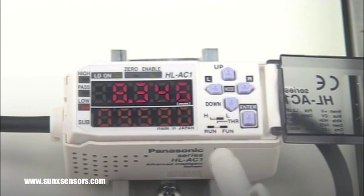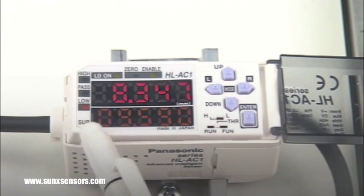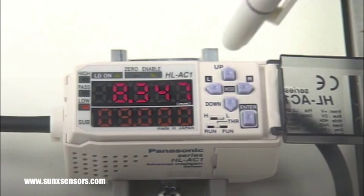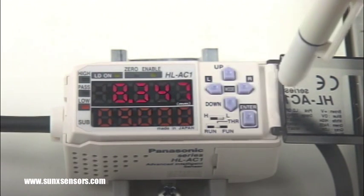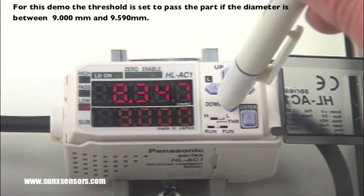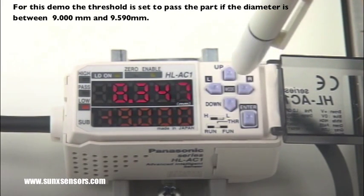To set up the threshold value, move the bottom selector switch to THR for threshold adjustment. When the switch is on H, you can adjust the high-end threshold. When the switch is on L, you can adjust the low-end threshold.